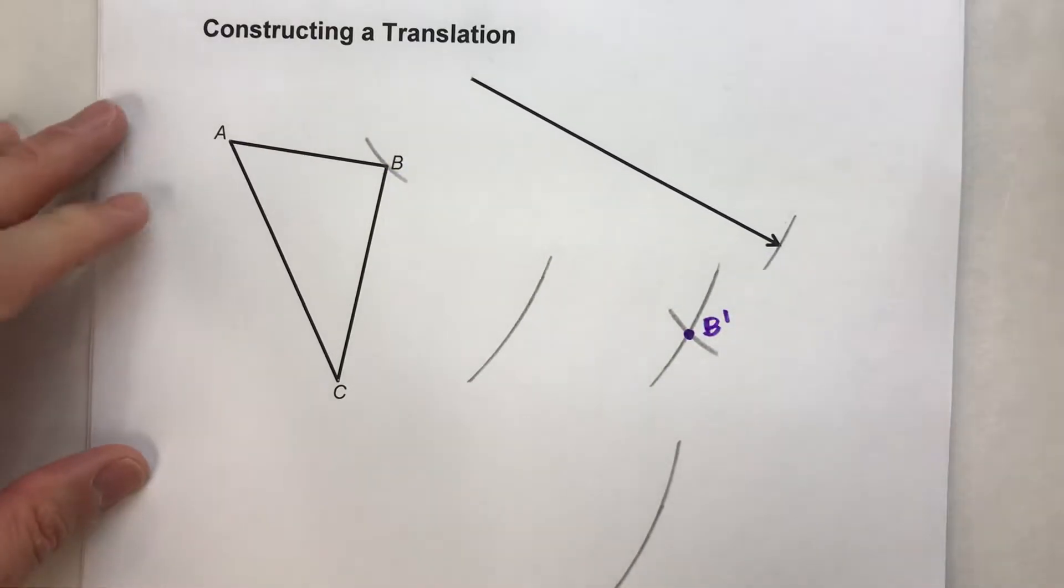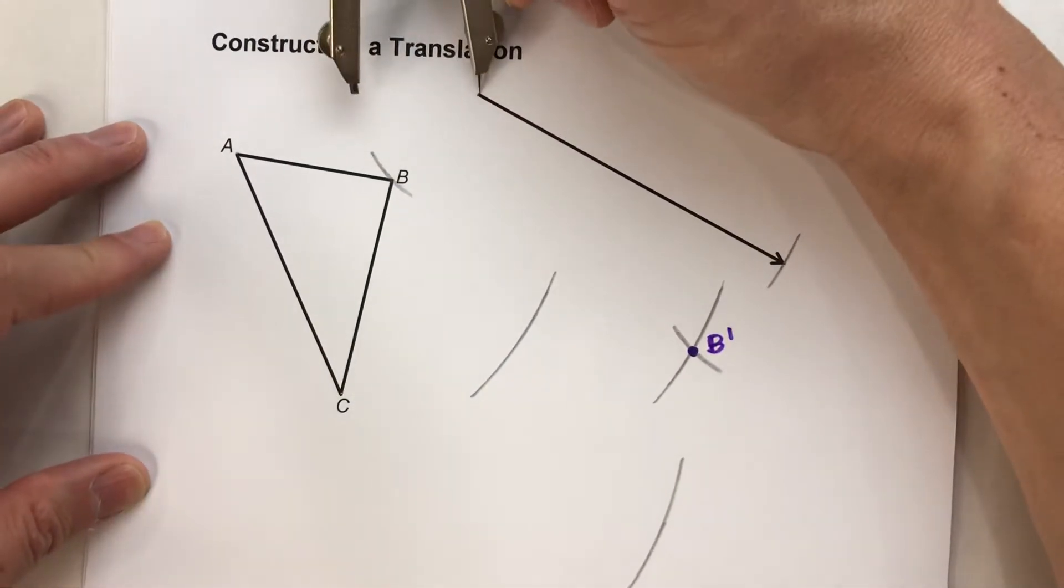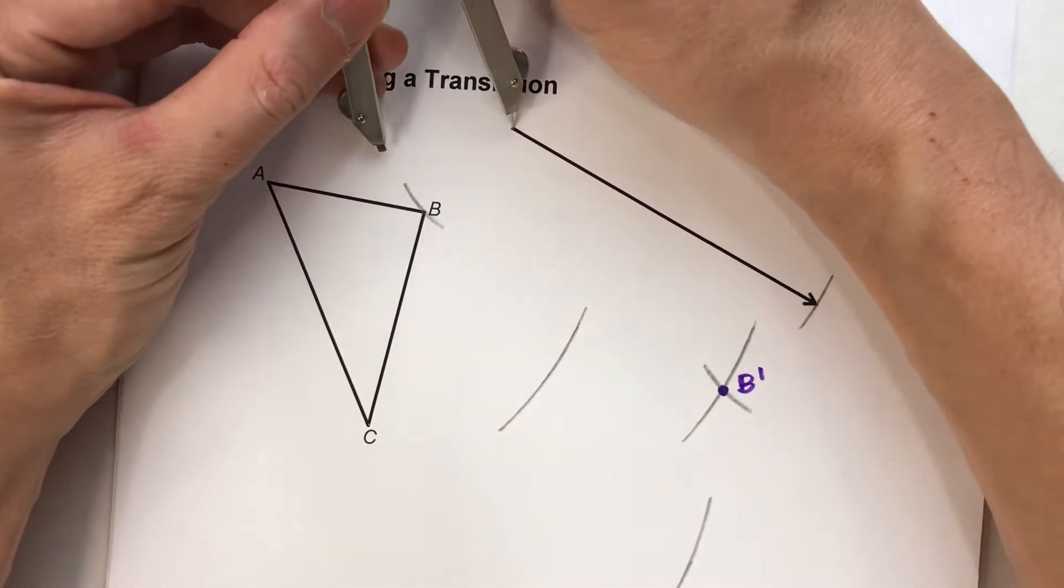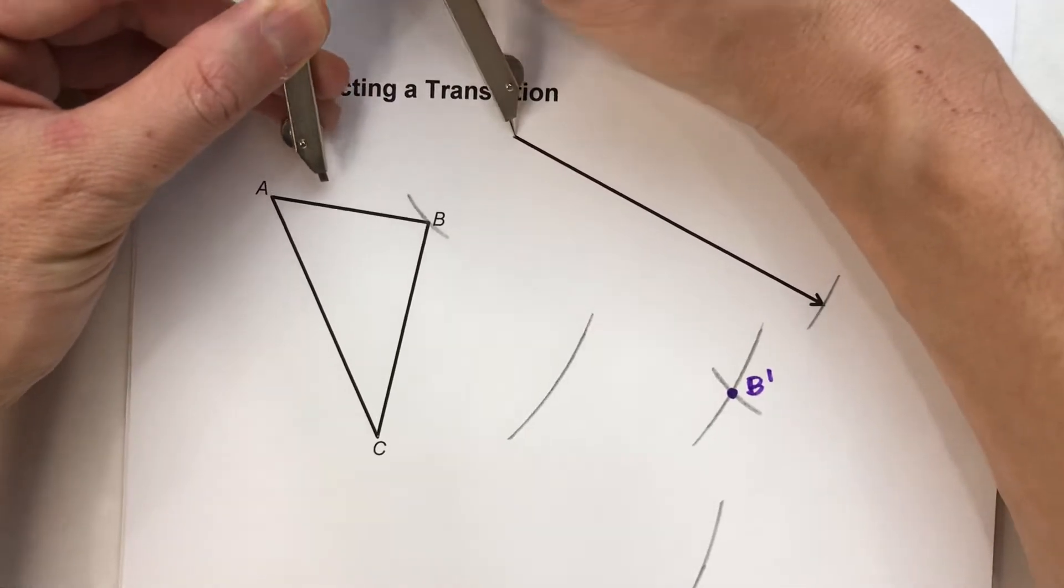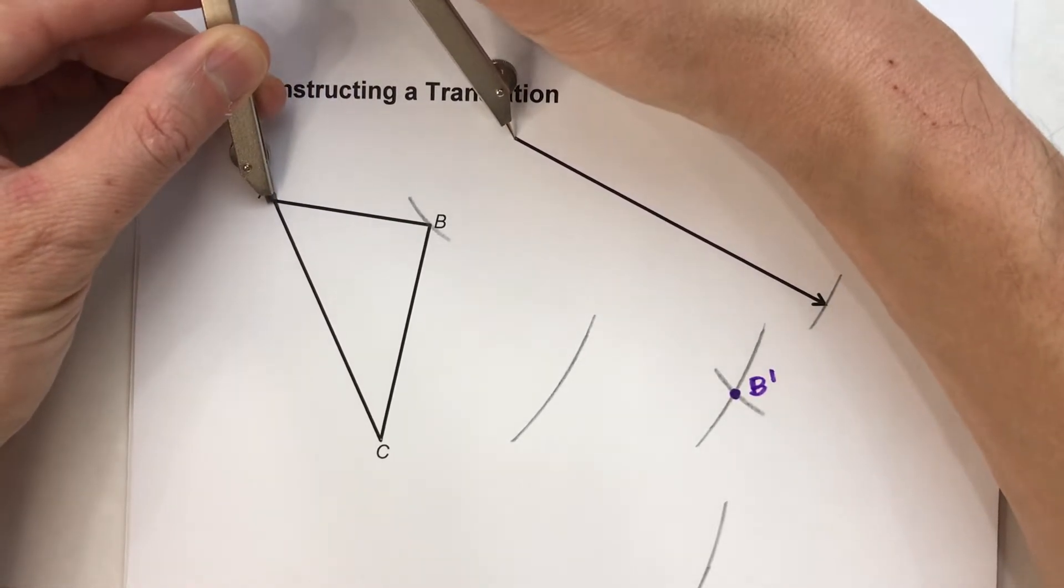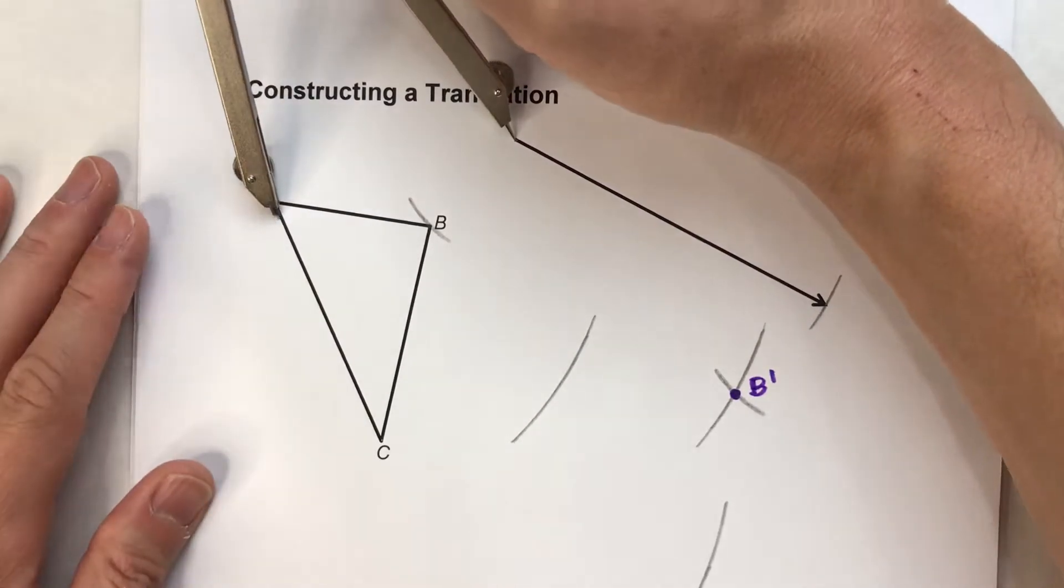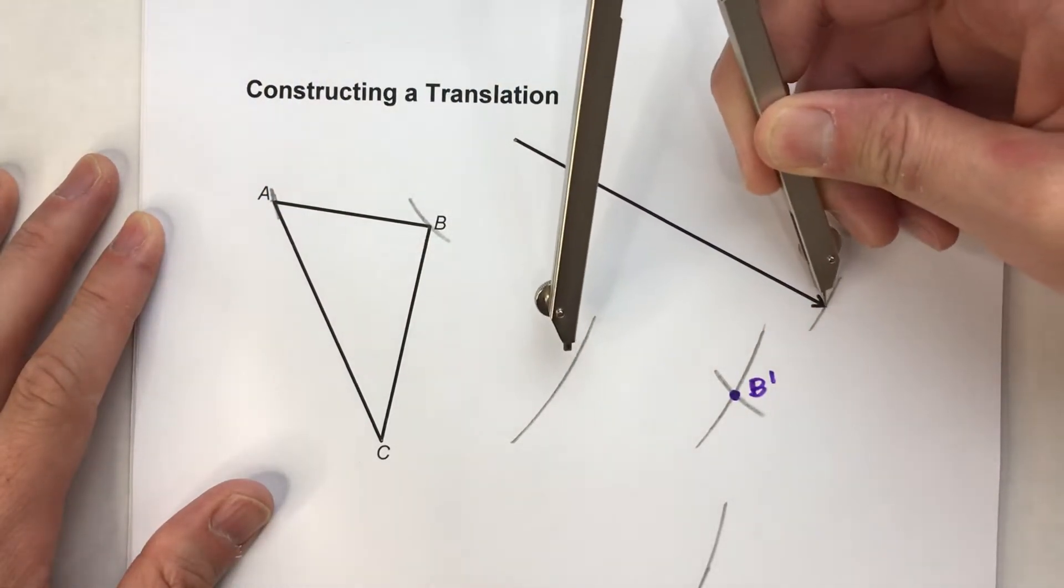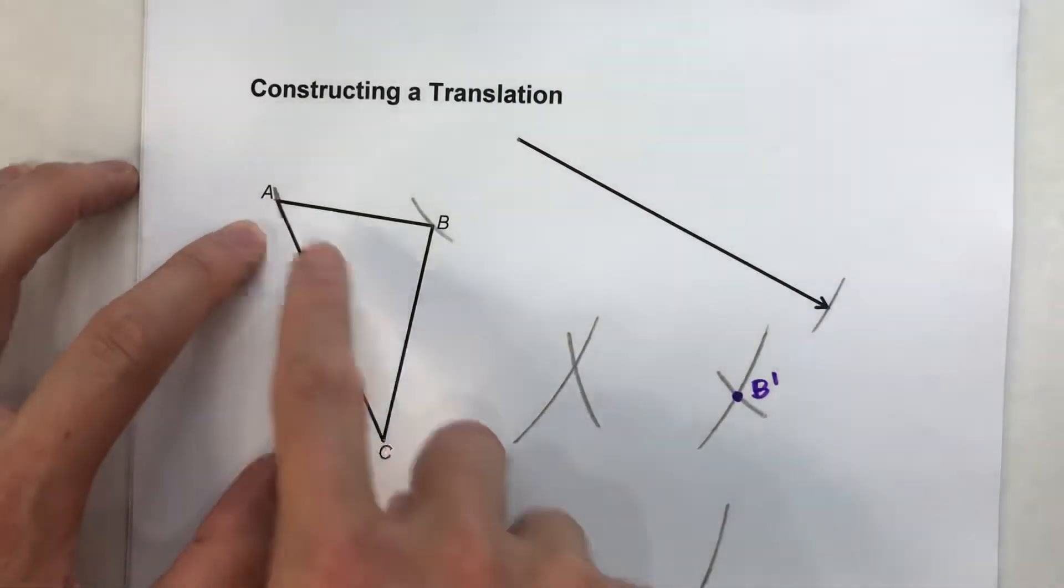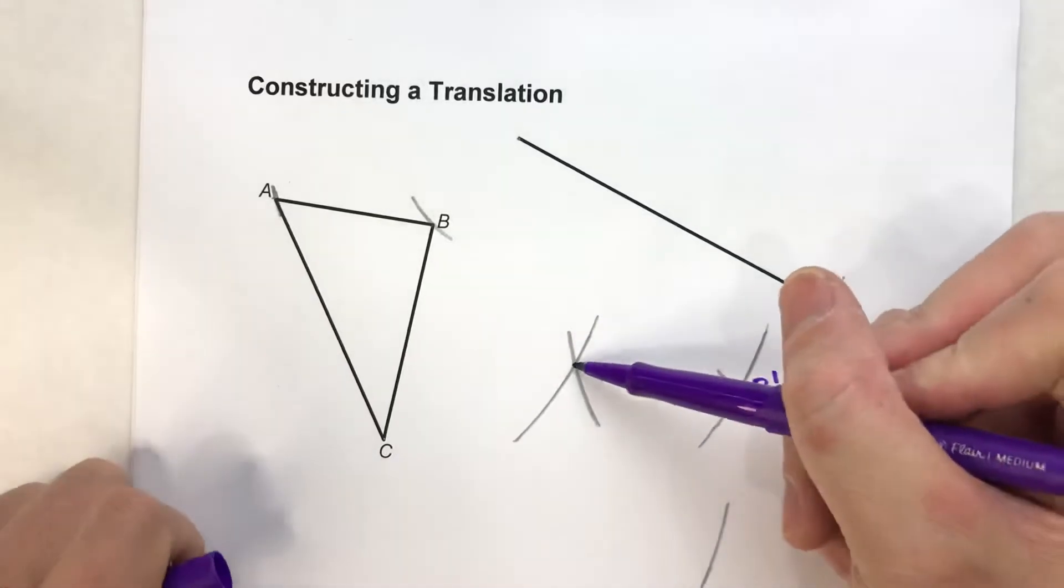And we'll just do that exact same thing with the other points. Here's the distance from the end of the vector to point A. A little more, right there. So I'm going to go to the other end of the vector and swing an arc. And now I know where A prime is going to be. It's going to be right here.